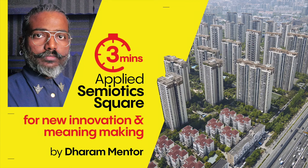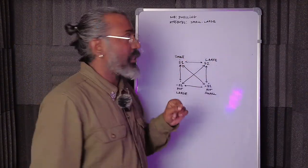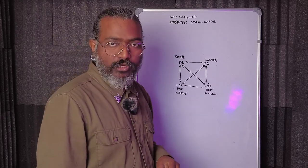Three minutes applied semiotic square method. I'm going to take the subject today, human dwelling, and I'm using attributes small and large.